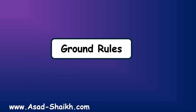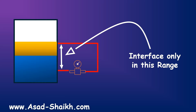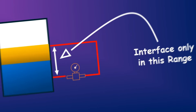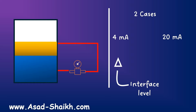Before we start with the calculation, one important thing is to know the ground rules. The distance between here — this range — has to always be full. And the second important thing is the interface will only be measured in this particular range. In terms of the 4 to 20 mA method, there are two important cases which we need to consider for calculation.